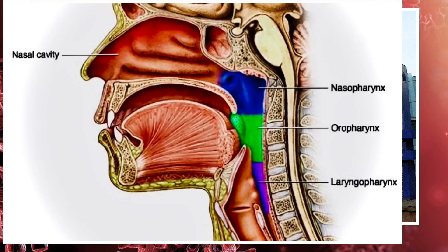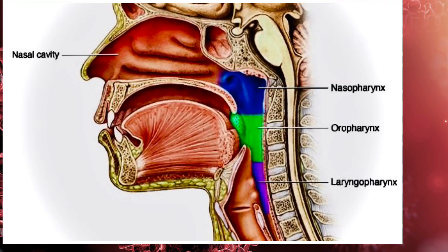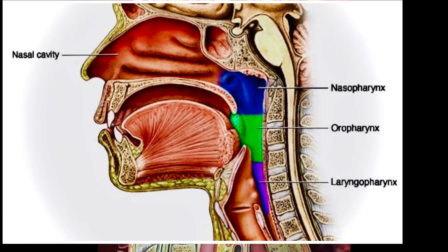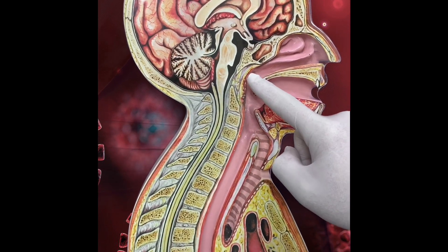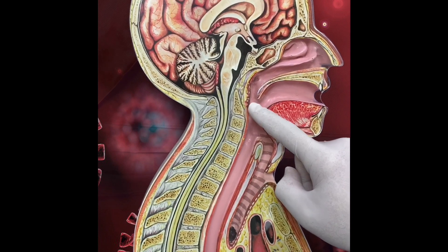To test COVID-19, CDC recommends to take swabs from nasopharyngeal and oropharyngeal. So this is the nose - if we go inside deep we will find the nasopharyngeal, and this is the oropharyngeal.